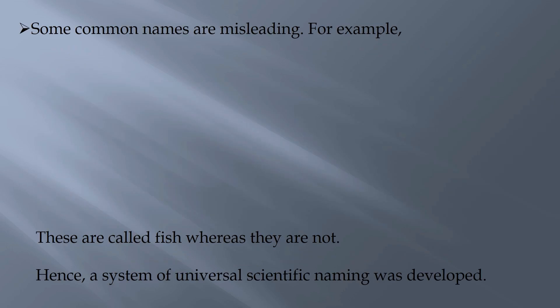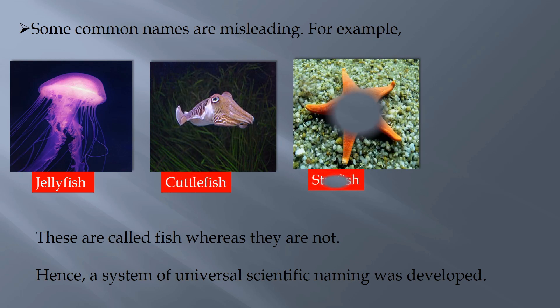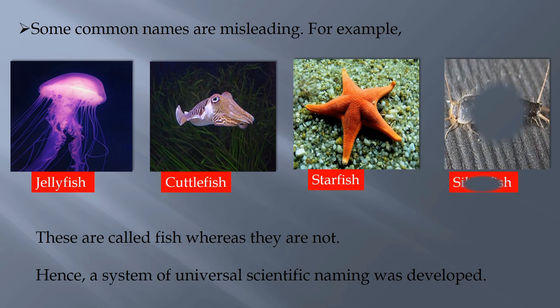Some common names are also misleading. For example, jellyfish, cuttlefish, starfish, and silverfish are called fishes whereas they are not. Hence, a system of universal scientific naming was developed.